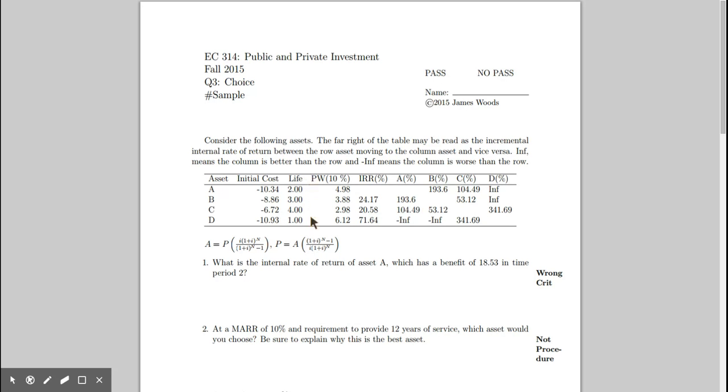Also, what I've done is made it so that I've calculated the present worth for you at 10% for all the assets, so you don't have to do any calculations like that. I've also calculated the internal rates of return for all the assets except for asset A. Calculating the internal rate of return on asset A is actually question number one. That's the reason why I don't do it for you.